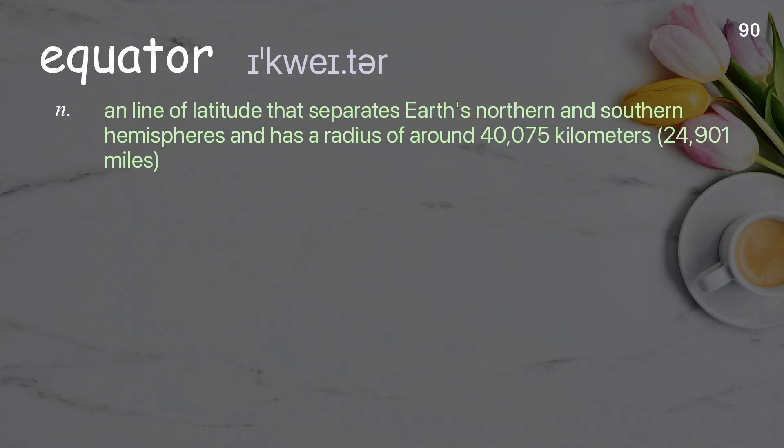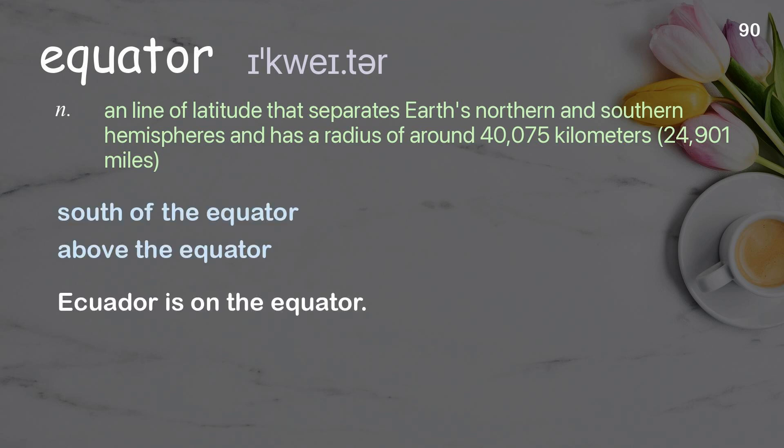Equator: A line of latitude that separates Earth's northern and southern hemispheres and has a radius of around 40,075 kilometers (24,901 miles). Examples: south of the equator, above the equator. Ecuador is on the equator.